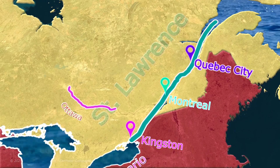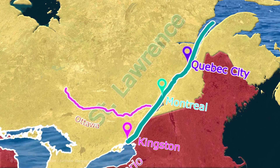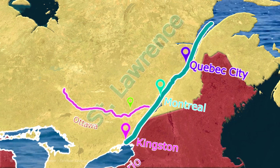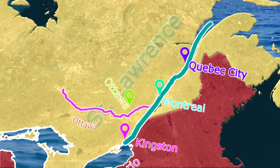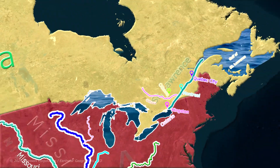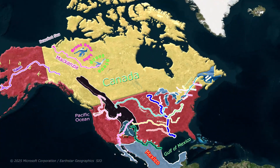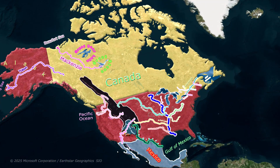The Ottawa River is its major tributary, on which Canada's capital, Ottawa, is situated. Thanks for watching.